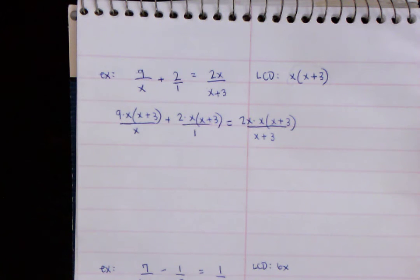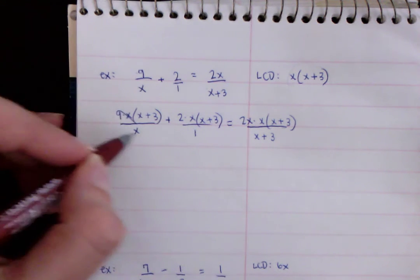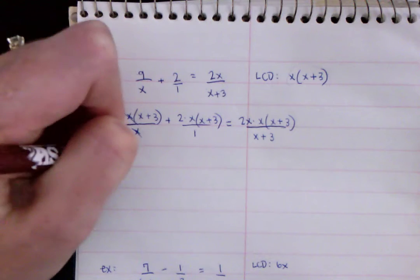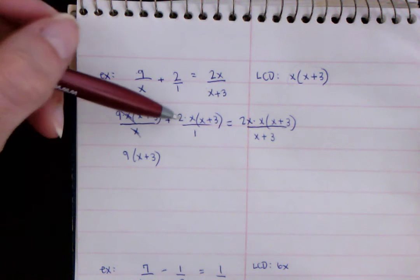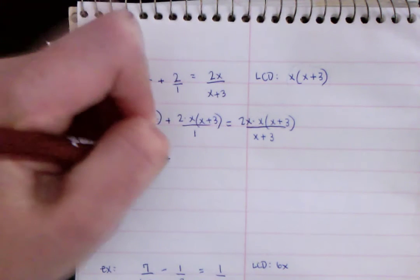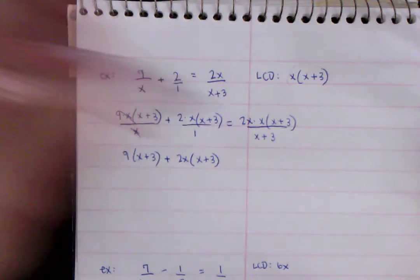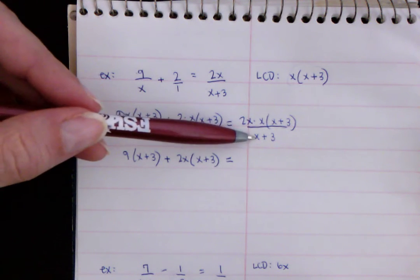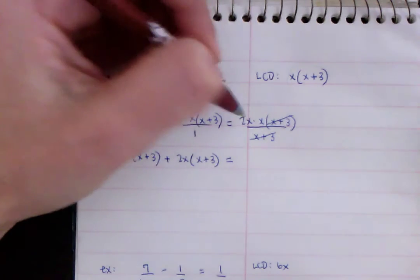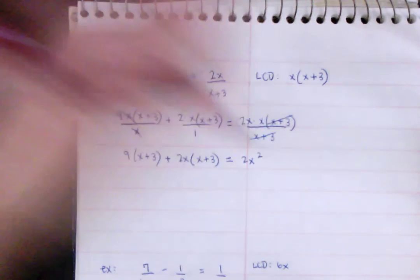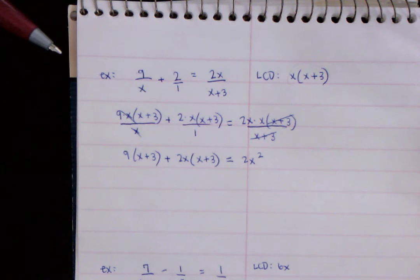So again, what's nice is we're going to get rid of some of these. So on this one, the X's end up canceling. All right. So we have 9 times X plus 3. On here, nothing cancels. So we have 2X times X plus 3. Okay. And then on the final equation, you can see the X plus 3s will cancel. So that's all that will cancel there. So now we have 2X times X, which is 2X squared. But you're going to see when we multiply this stuff out, things are going to end up canceling. So don't worry.